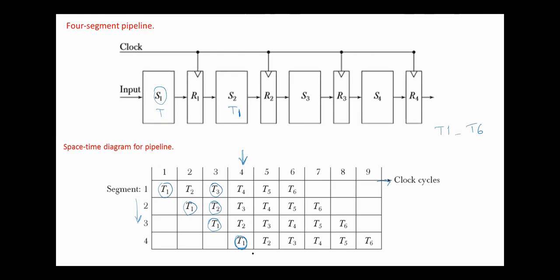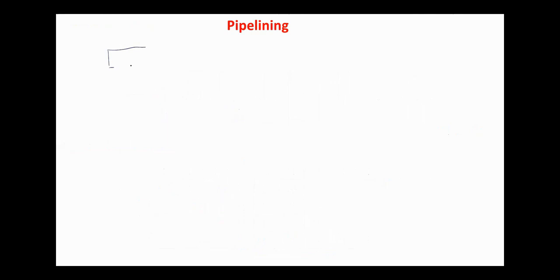And from now on, the pipeline completes a task every clock cycle. On T5, we complete T2, T6, T3, et cetera. In general, consider we have a K-segment pipeline.